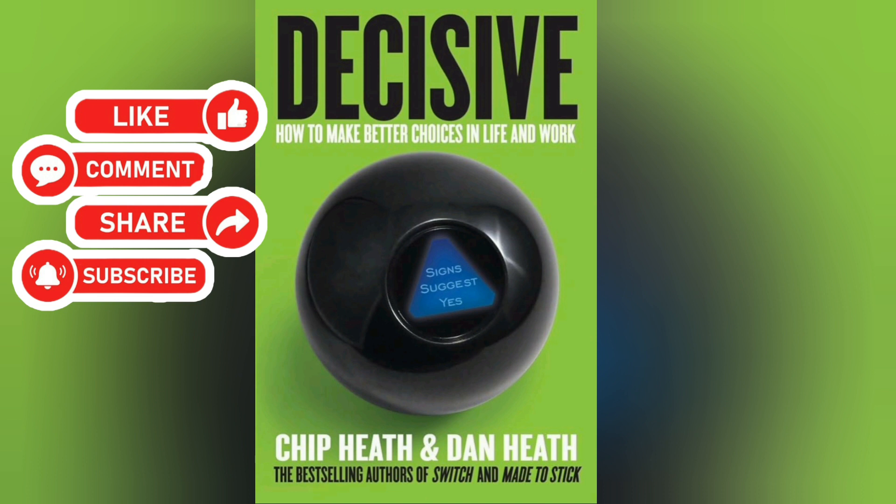The third element of the WRAP model is Attain Distance Before Deciding, which highlights the value of taking a step back from the decision-making process to gain clarity and perspective. By creating emotional distance, you can make more rational choices that align with your long-term goals.